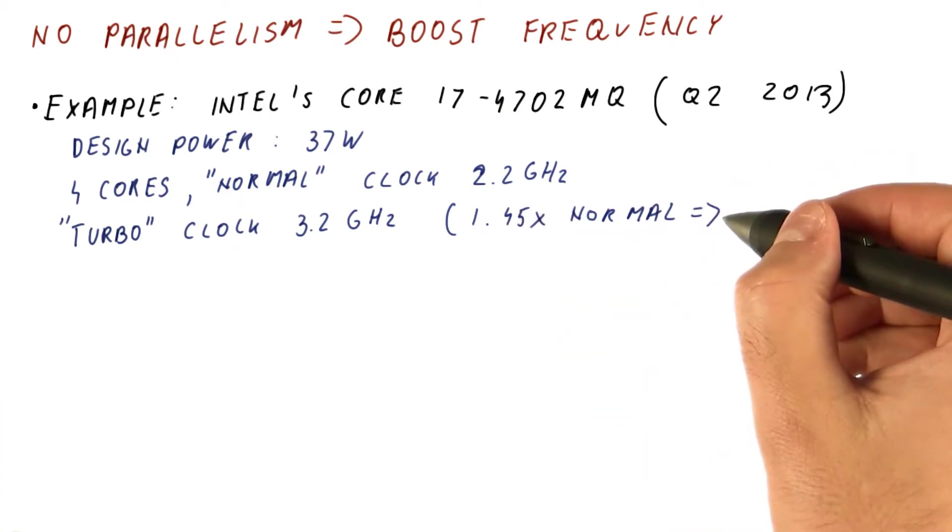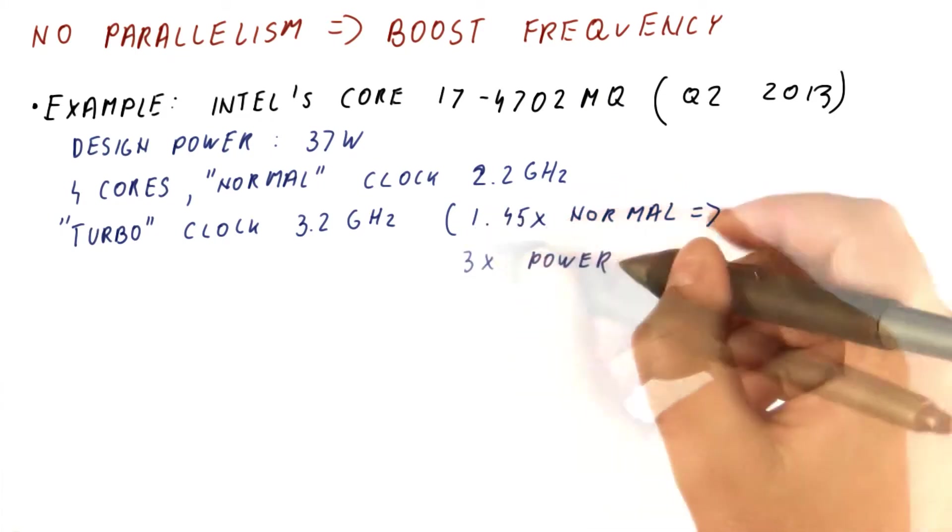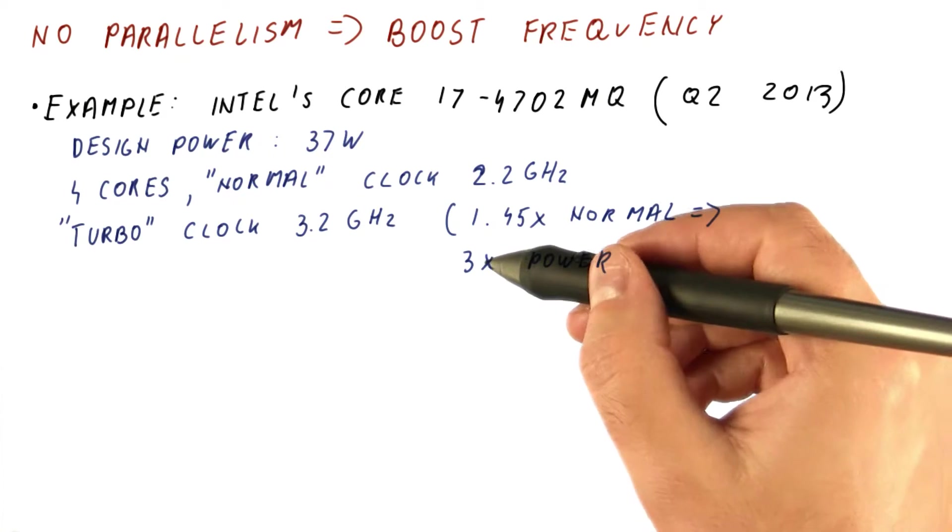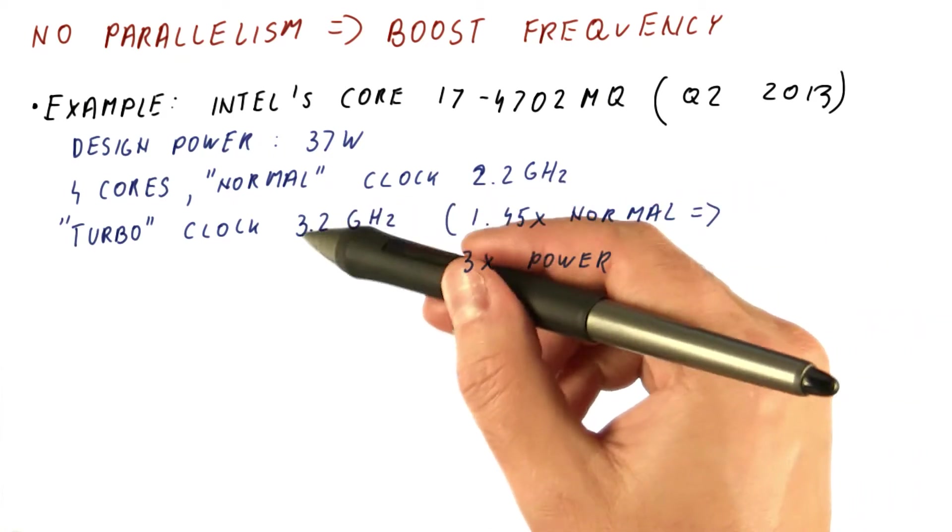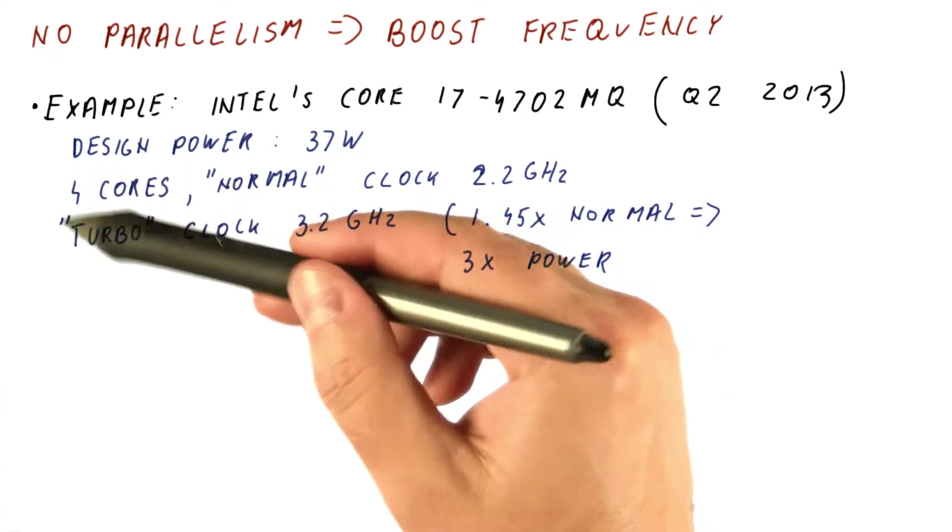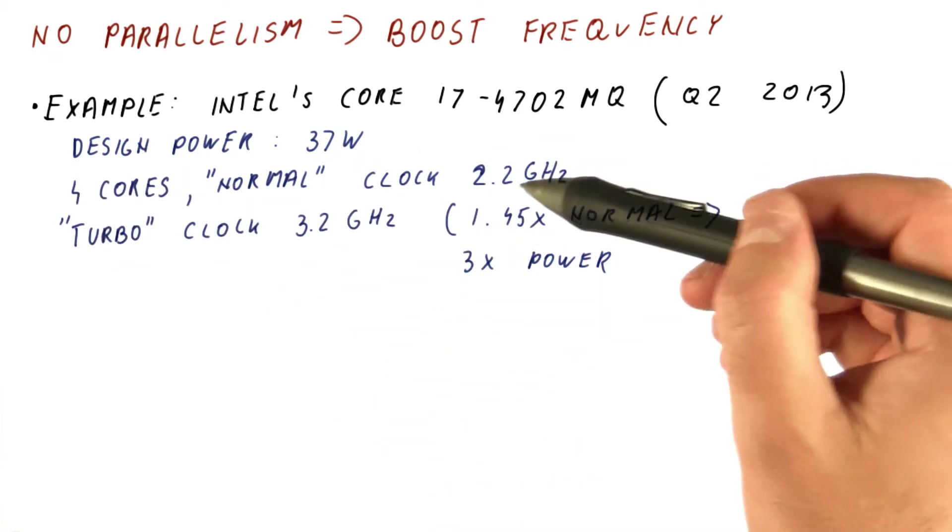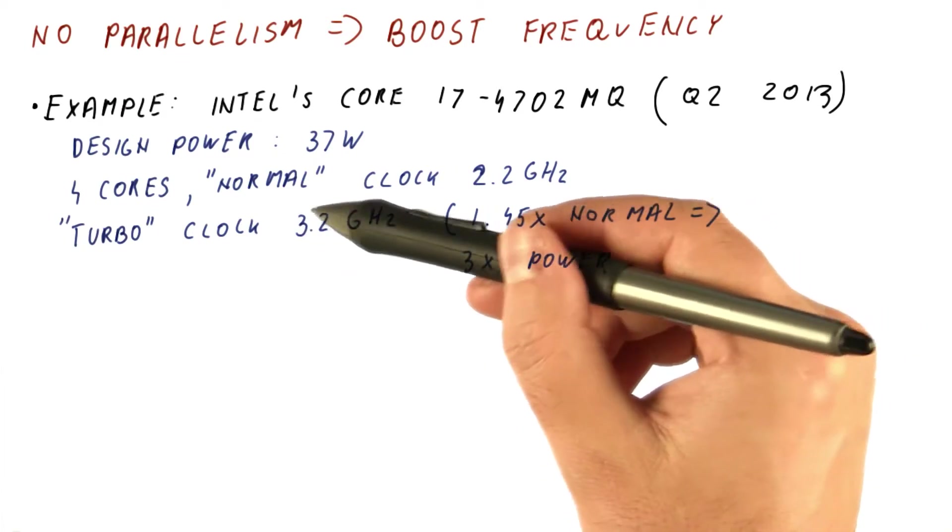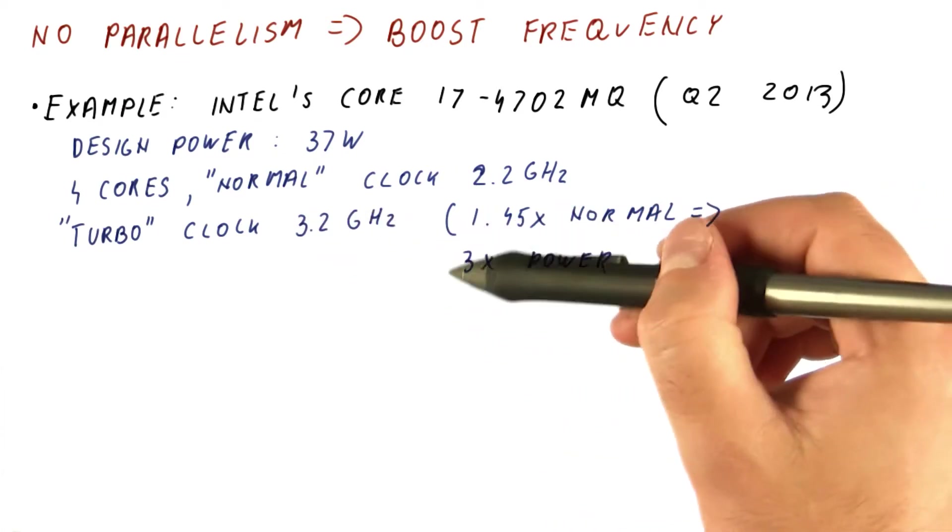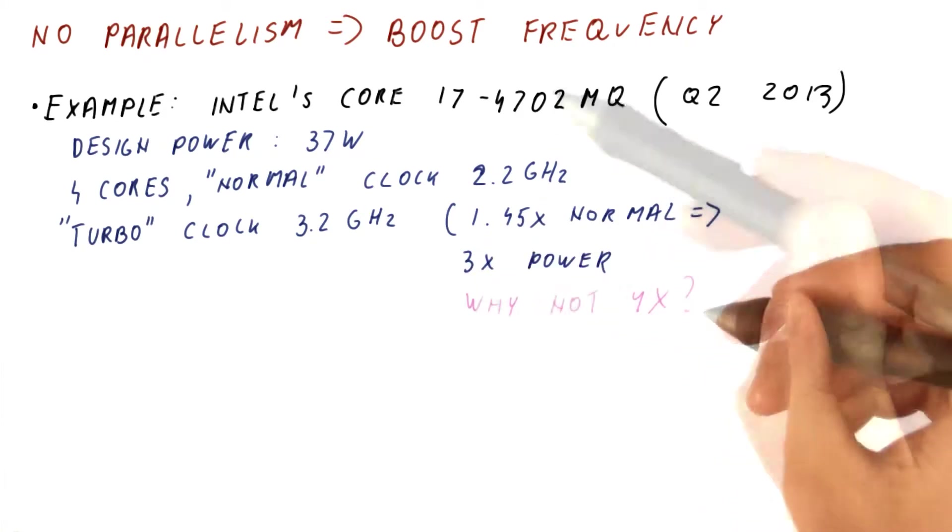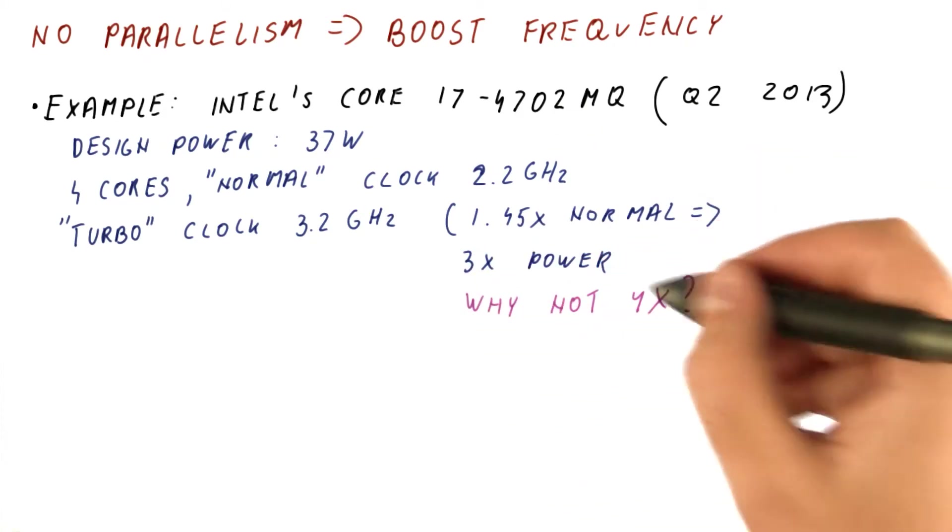If we assume that the power increases cubically with this, then we would get three times the power. So we are not using four times the power of a single core, which we should be able to get because it's four cores. So when operating one quarter of the cores, that one quarter of the cores can get four times the power. We're only getting three times. So the question is, why not four times?